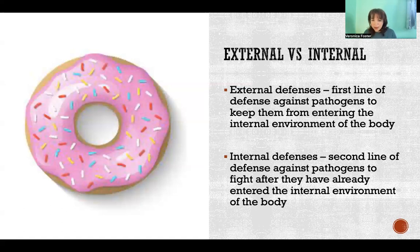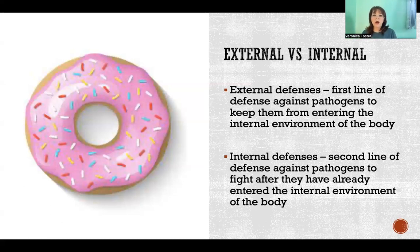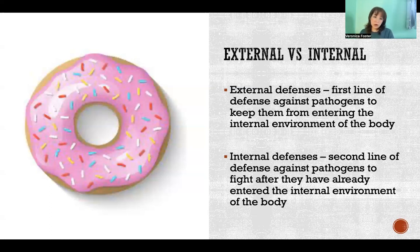Until something is absorbed through the tract, it's still in the external environment of the body. That's why all of the tracts are lined with mucous membranes — mucous membrane is an external defense, lining all of the tracts because they are all open to the outside environment. The digestive tract is open on both ends, but the respiratory, urinary, and reproductive tracts are all only open on one end. In any case, it's still open to the outside environment, so the inside of that tube is still considered the external environment. That's why mucous membrane is one of our many external defenses.